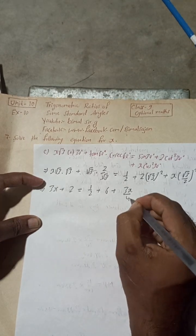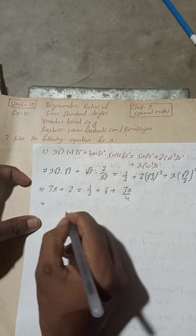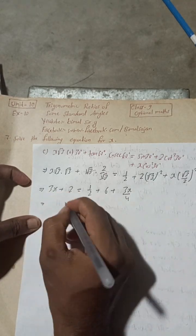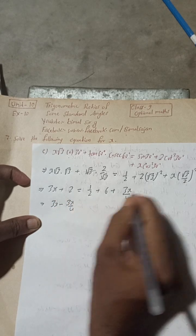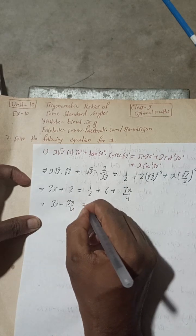And this is x, so 3x, and 2 square is 4. Now what you can do here, you take this x part this side, so this is 3x minus 3x by 4.